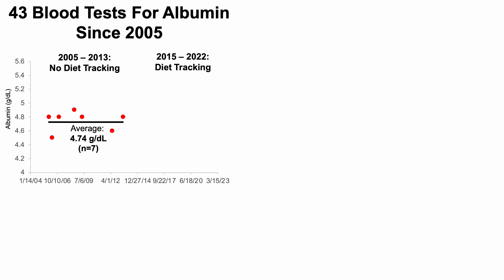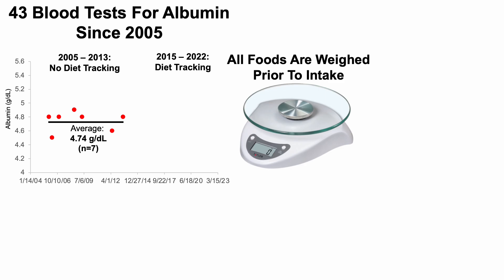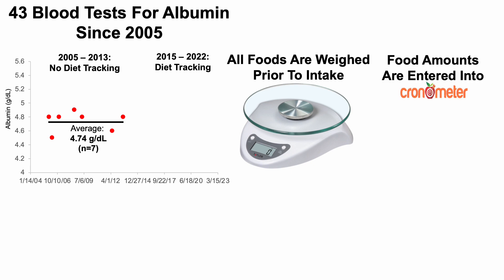In 2015, I had the idea to start diet tracking. I've been weighing literally all of my food since April of 2015 using a food scale, then entering those food amounts into Chronometer. This is just what I've used every day since 2015 — there may be other apps that do a similar thing, quantifying food composition.